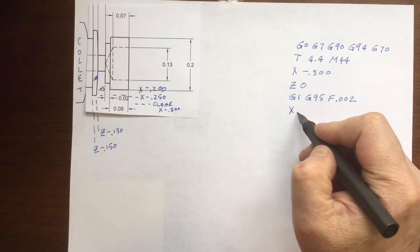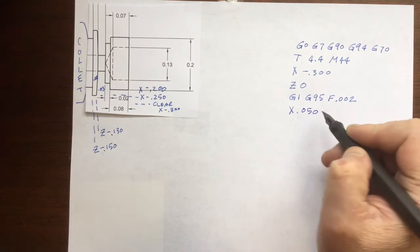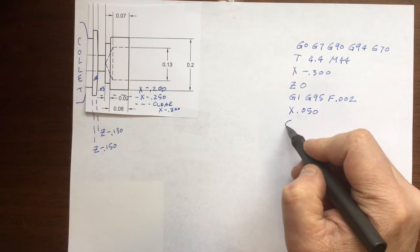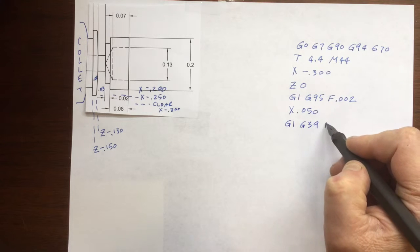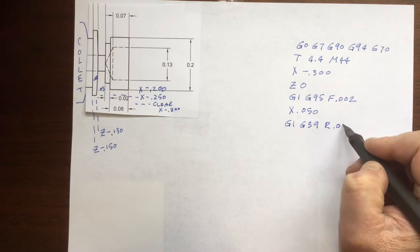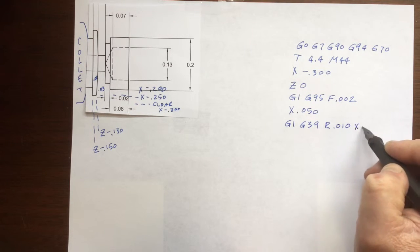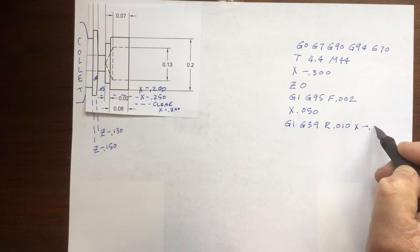First we'll face to a position of 50 thousandths to the other side of center line. Let's use G39 to make an automatic chamfer to the next move. The syntax is the same as the G36 function.